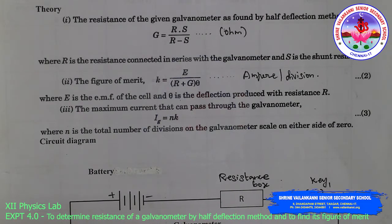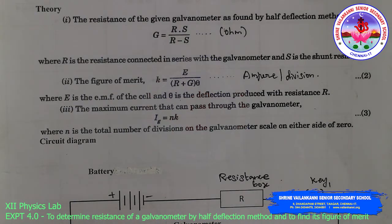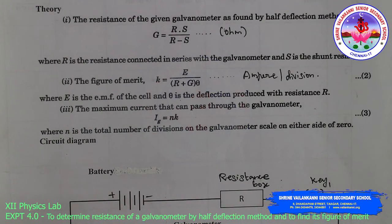Theory: the resistance of the given galvanometer is found by the half deflection method. G equals R·S divided by (R minus S) in ohms, where R is the resistance connected in series with the galvanometer and S is the shunt resistance. For the figure of merit, K equals E divided by (R plus G) multiplied by theta, in ampere per division.